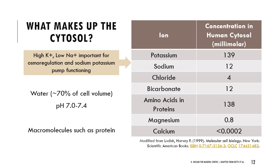When thinking about what makes up the cytosol, you don't need to memorize all the numbers, but pay attention to the high amount of potassium ions — about 139 millimolar — and low amount of sodium — about 12 millimolar. That ratio is important for osmoregulation; keep that in mind when we talk about excretion later. The sodium-potassium pump is what cells spend a lot of their ATP on — really important for propagating action potentials. Most of the cytosol is water, about 70% of the cell's volume, kept at a pH of about 7 to 7.4, with a lot of other macromolecules like proteins.